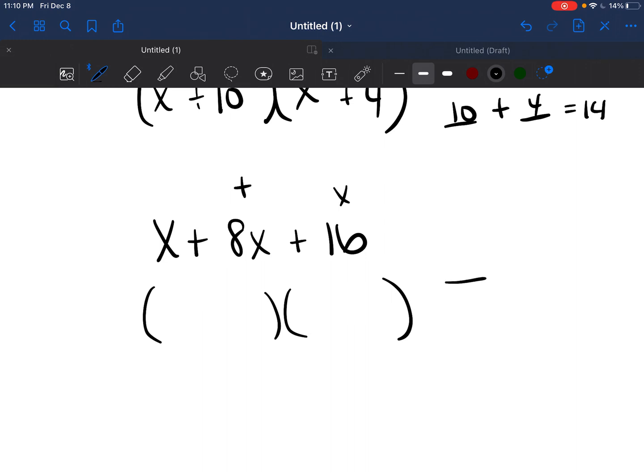All right? So those two numbers multiply to get 16. They add to get 8. If you guessed 4 and 4, you're correct. 4 times 4 is 16. 4 plus 4 is 8.